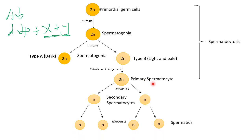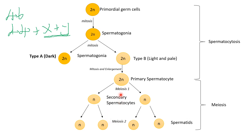Once the spermatocytosis stage is done, the next stage is meiosis. In meiosis the chromosome number is halved. In meiosis I, the primary spermatocyte divides and the chromosomes are halved to the haploid number, producing two haploid secondary spermatocytes. These secondary spermatocytes then divide in meiosis II to produce four haploid spermatids.